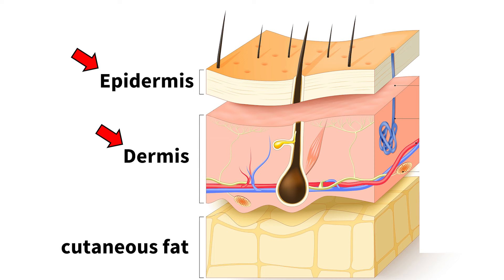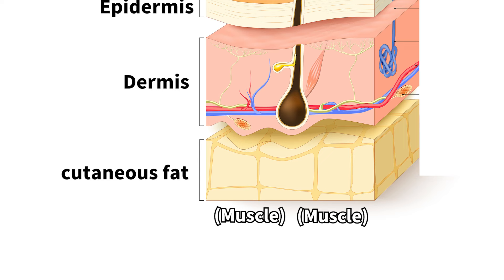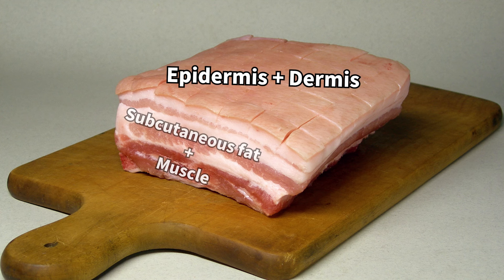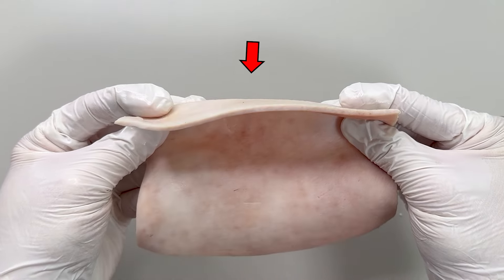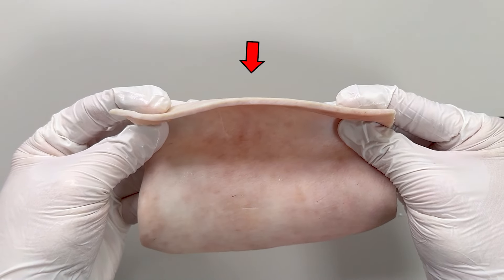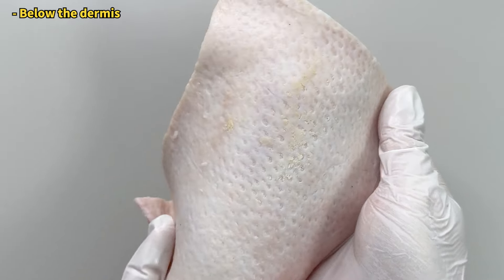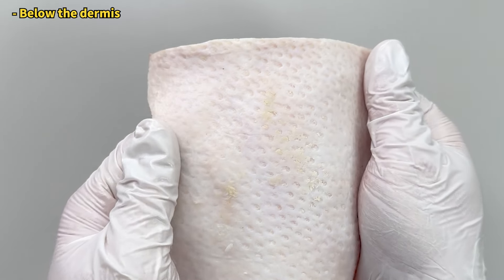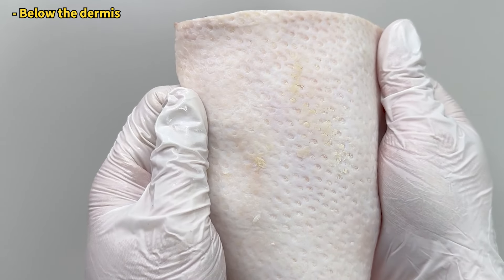The outermost layers of the human body are the epidermis and dermis, beneath which lie subcutaneous fat and muscle. The area under the dermis contacts the subcutaneous fat, which is why there's so much fatty tissue remaining.